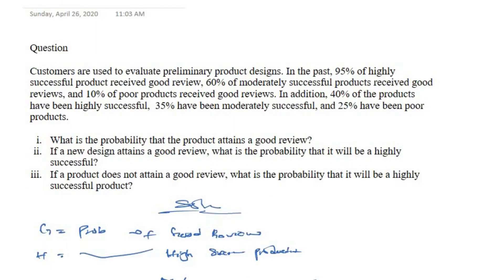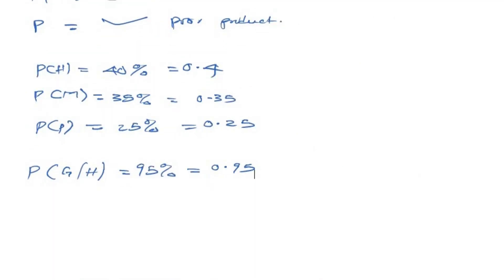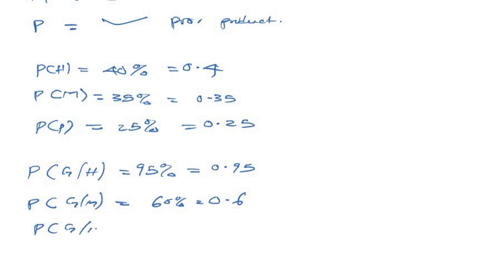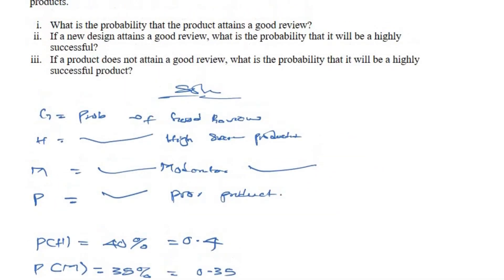We are also told that 60% of moderately successful products receive a good review, so P(G|M) = 0.6. And 10% of poor products receive a good review, so P(G|P) = 0.1. Now we have all the given parameters.